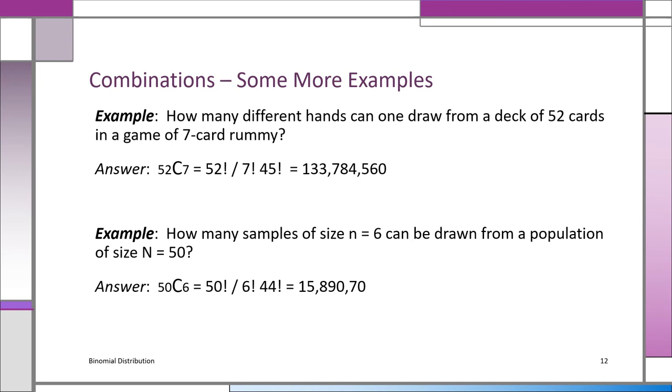Look at this problem. Example one. How many different hands can one draw from a deck of 52 cards? That's a typical deck. And you're playing seven card Rummy. So how many hands of seven? Remember, this is a combination because we don't really care about how it comes in. You just want to know how many different hands can you get. Well, 52 combination seven. Notice it's 52 factorial over seven factorial times 45 factorial. Again, seven and 45 is 52. So, you know, you got it right. But 52 combination seven is a huge number, 133,784,560. That's your answer.